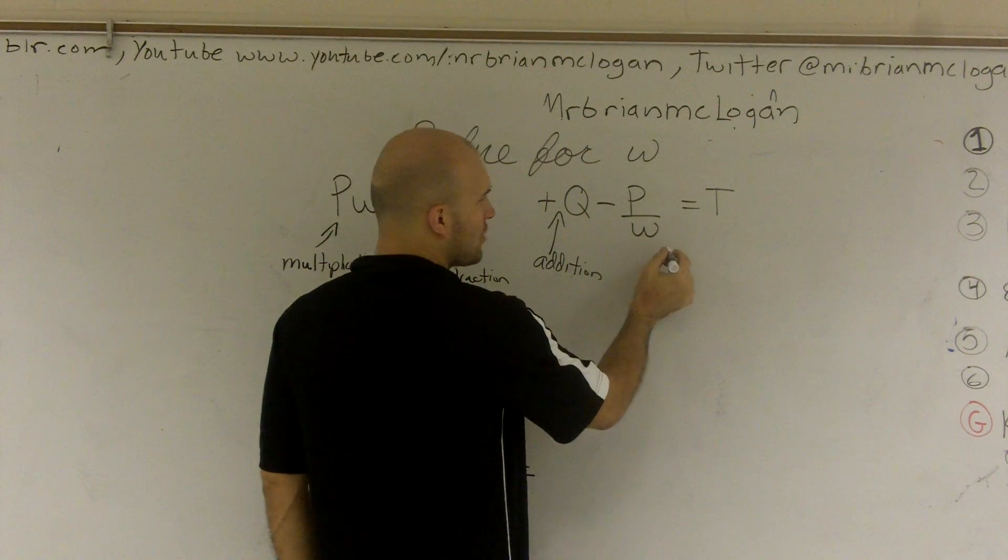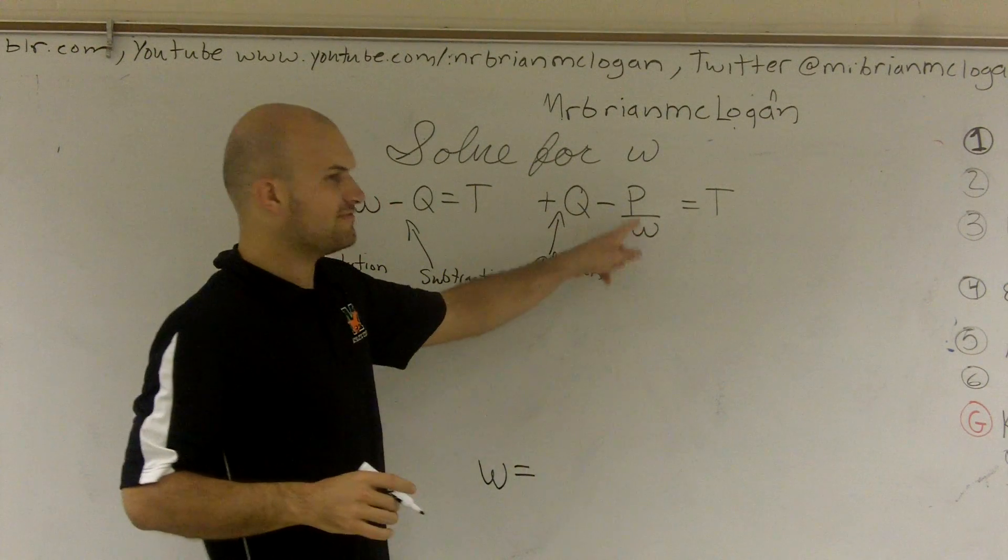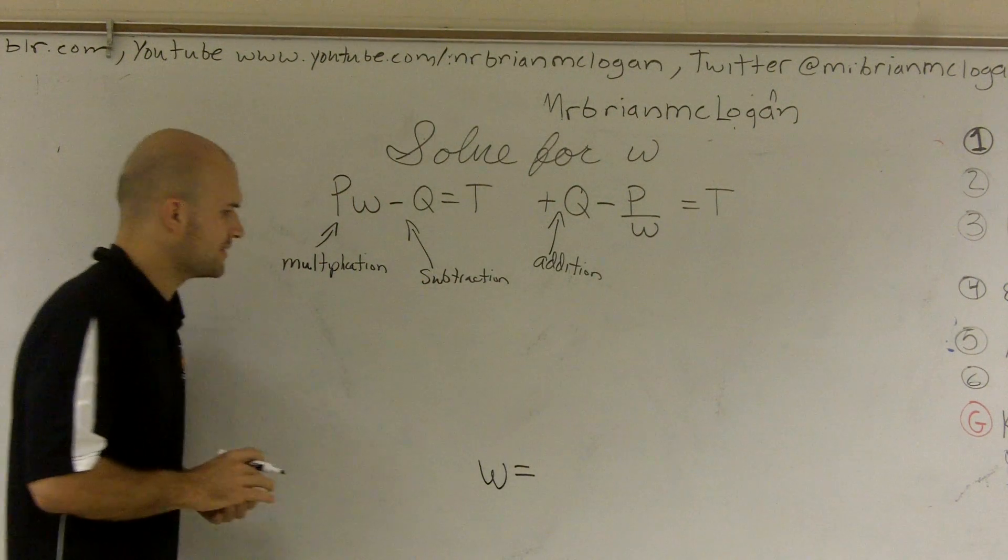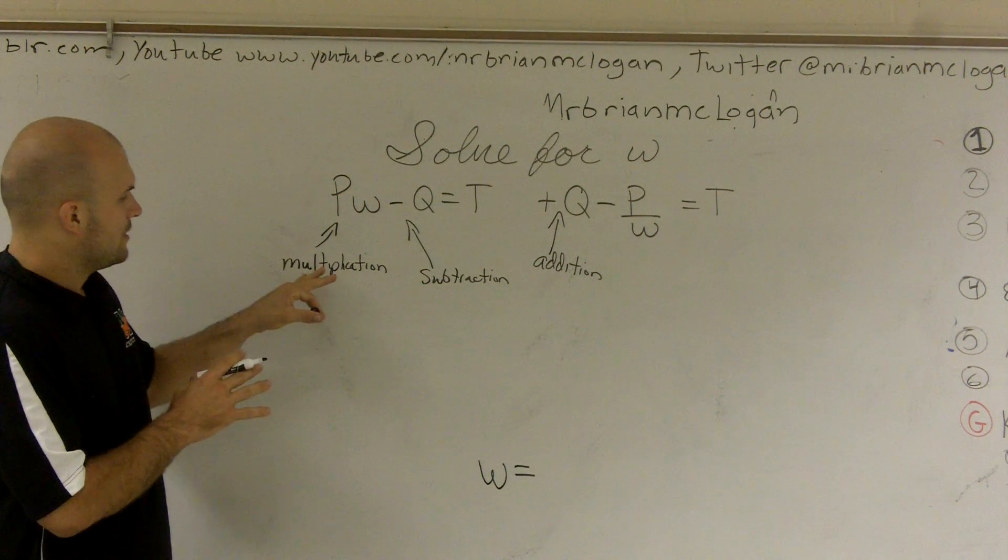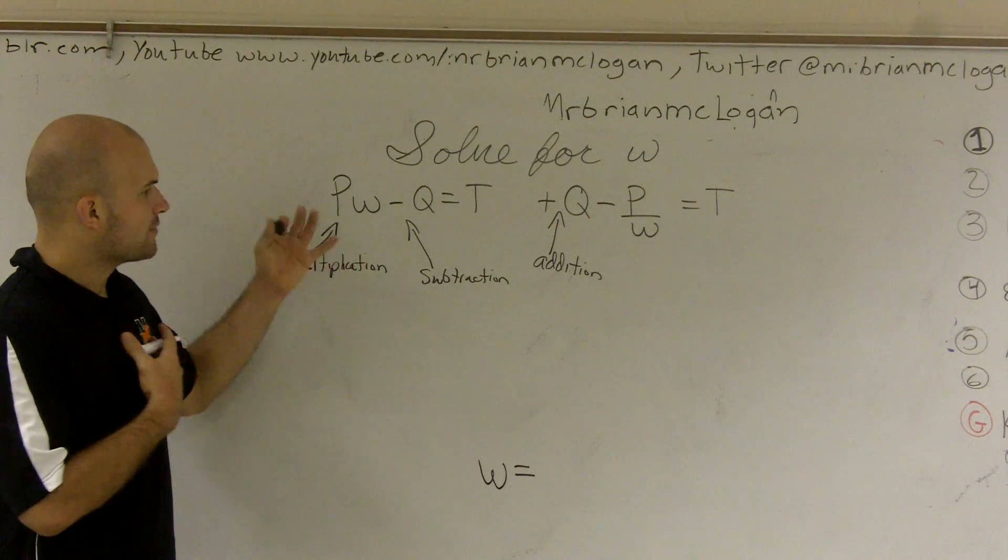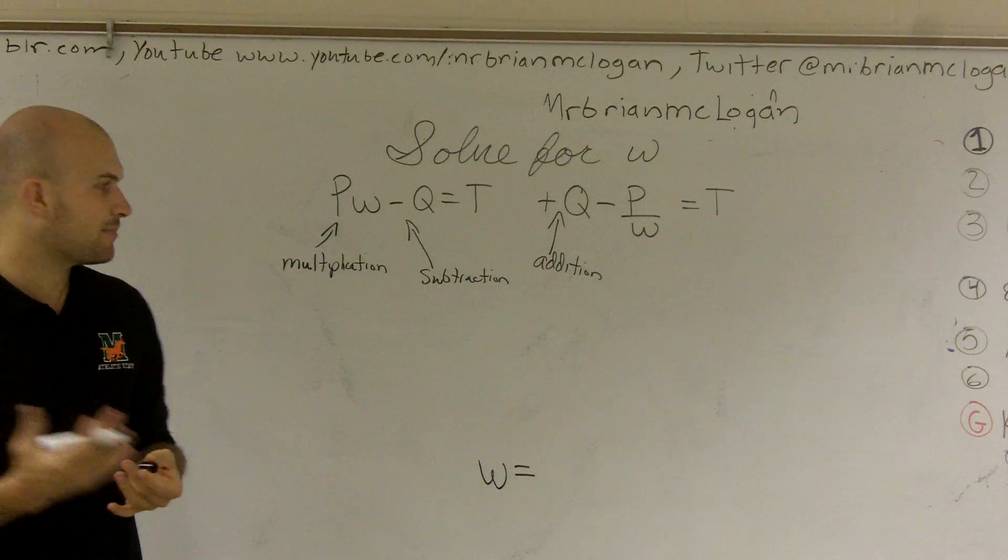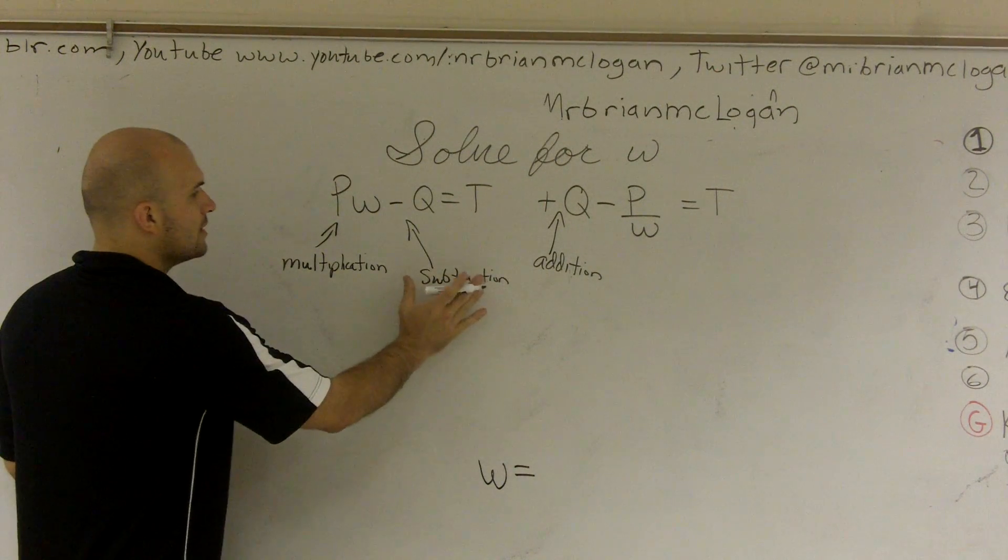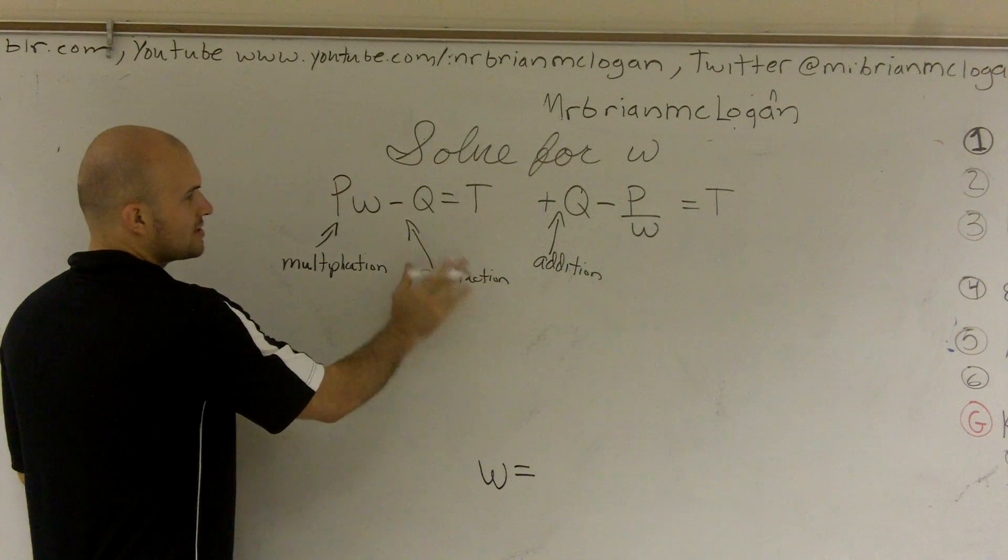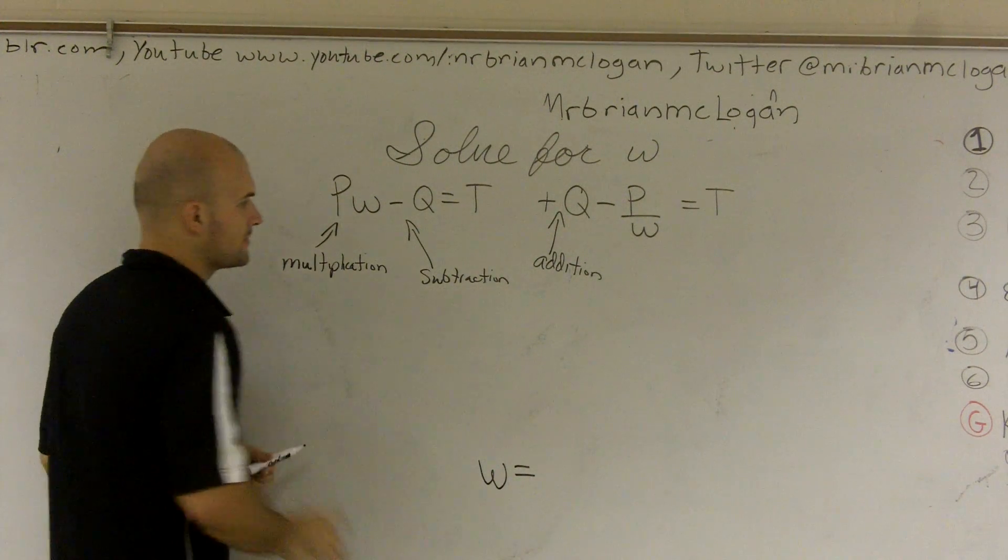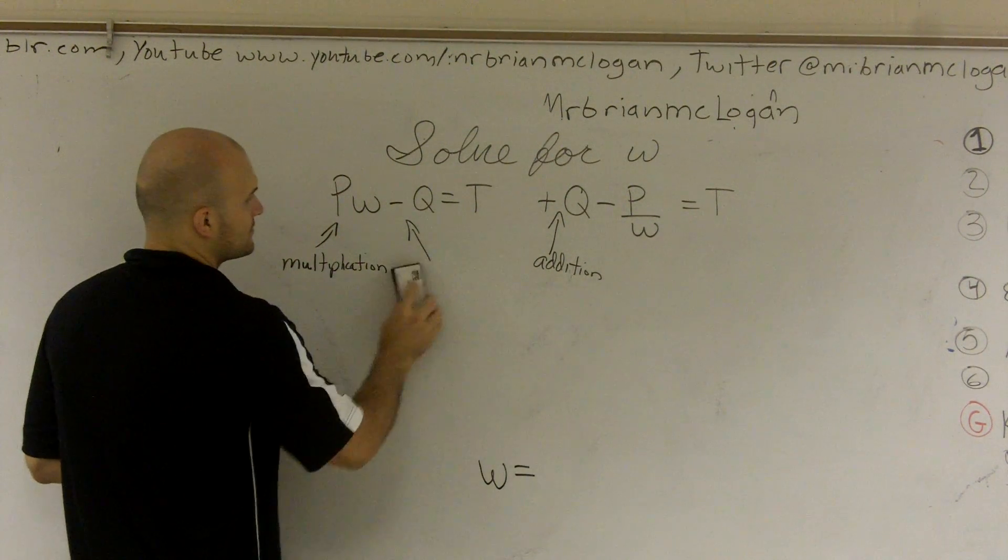And then, this one's even more confusing, is I'm actually dividing by my variables. So I'm going to get to that when we get to it. So first thing what we want to do is when we're doing inverse operations, it's kind of like the reverse PEMDAS, reverse order of operations. You always want to undo addition and subtraction first. So I need to undo subtracting by my q. So to do that, I'm going to want to add q.